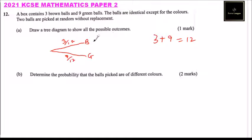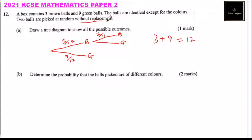On the second pick, you may pick a brown again or you may pick a green. The probability — since you had picked a brown, the brown reduced by one so we have two, and the total reduced to 11 because we are not replacing. If you picked a brown ball and then a green, the green are the same so they are nine, but the total reduces to 11.